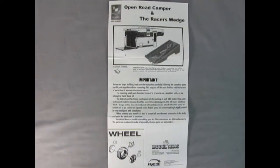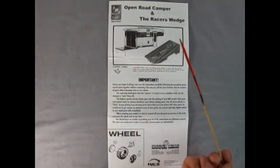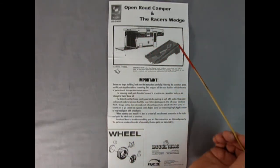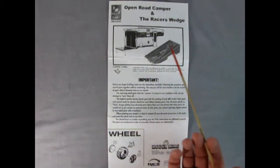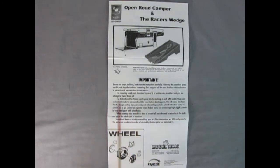Now the best place we can start our tour of our model kit is of course with the instructions. And here we get the open road camper which looks really great and the racer's wedge. Both of these can be dropped into different pickup trucks or mounted on the pickup truck chassis. Of course we have our important parts - before you begin building look over the instructions carefully. And down here we have the wheels and tires going together.